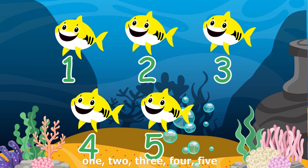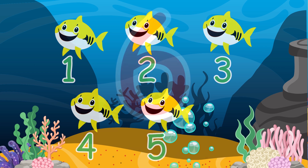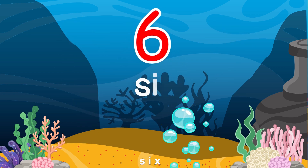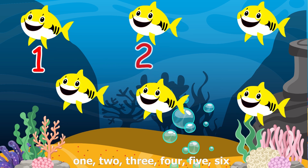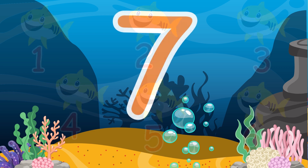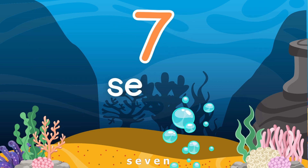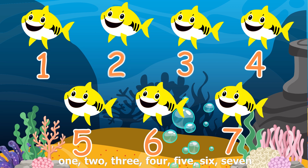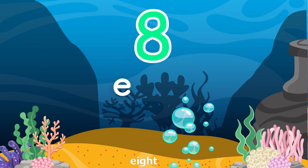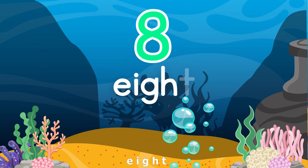S-I-X. There are six baby sharks. 1, 2, 3, 4, 5, 6. S-E-V-E-N. There are seven baby sharks. 1, 2, 3, 4, 5, 6, 7. E-I-G-H-T.